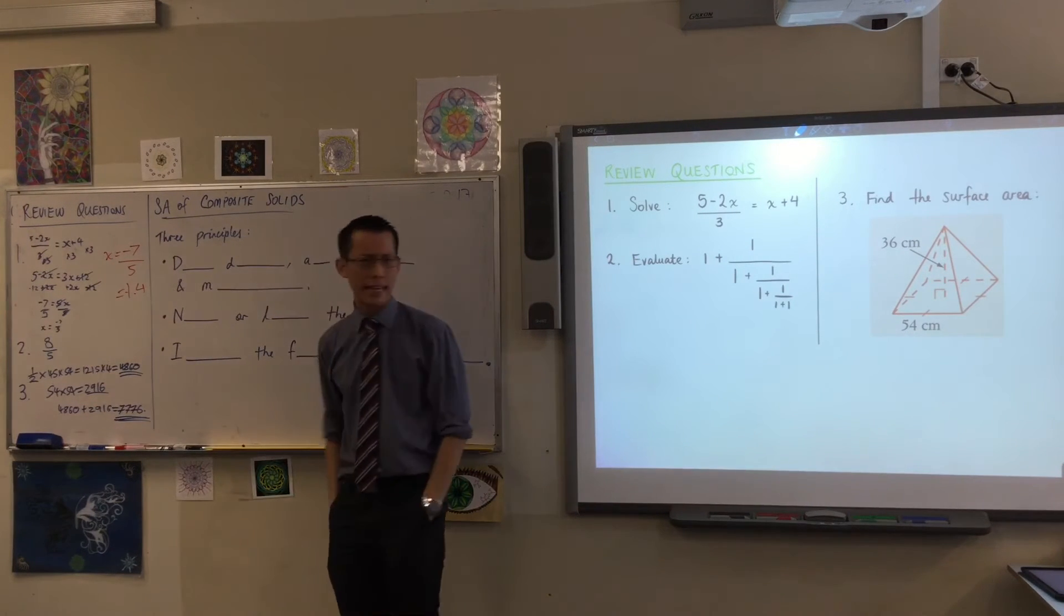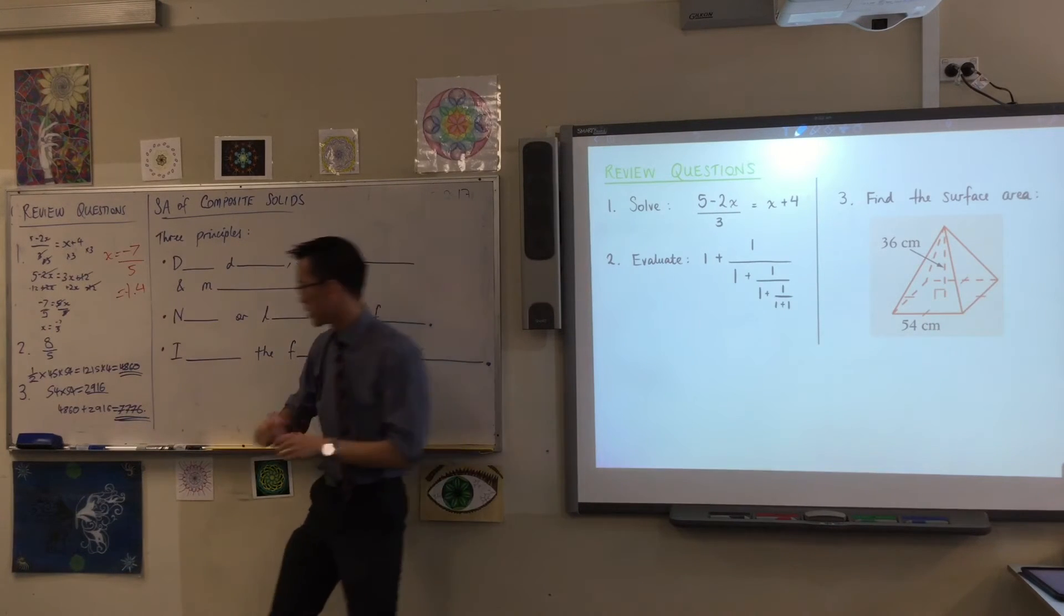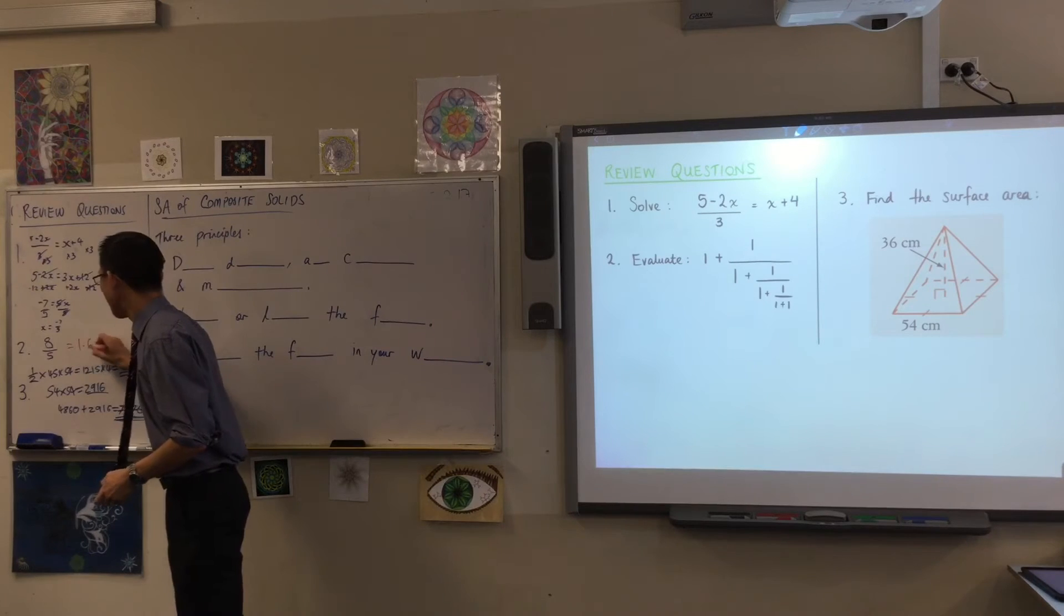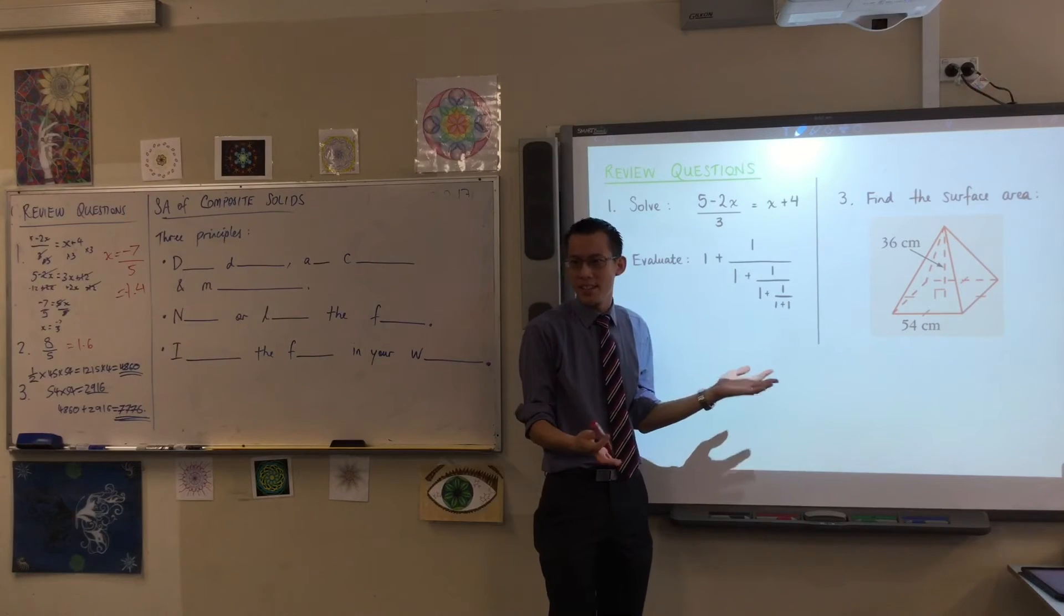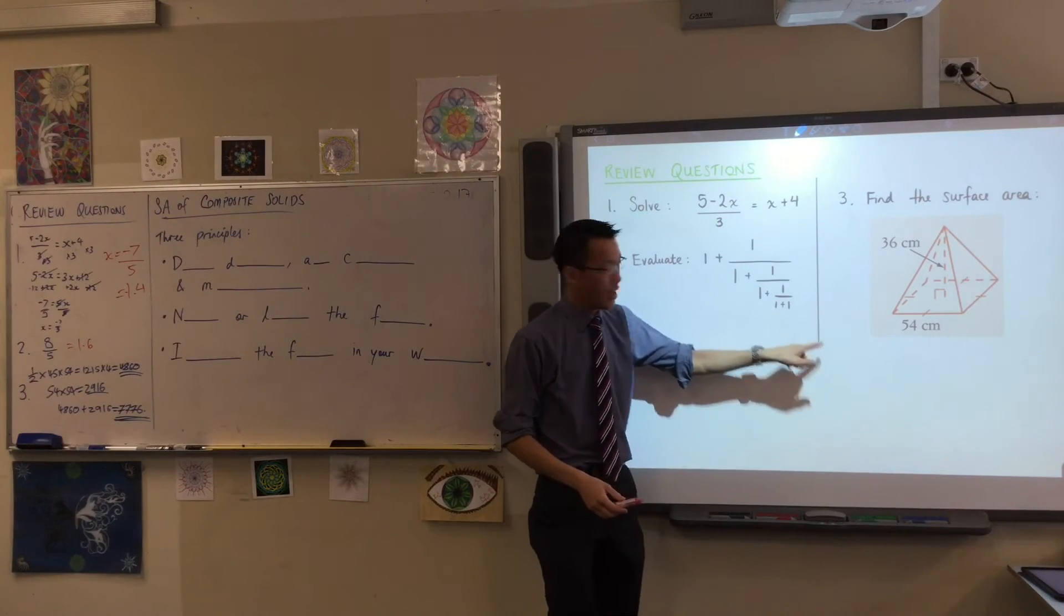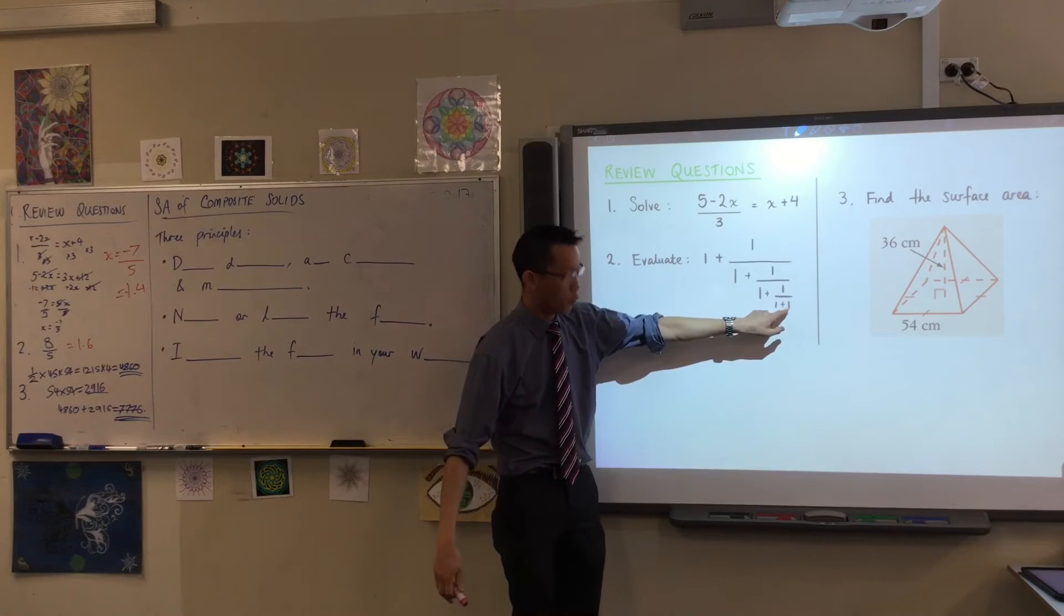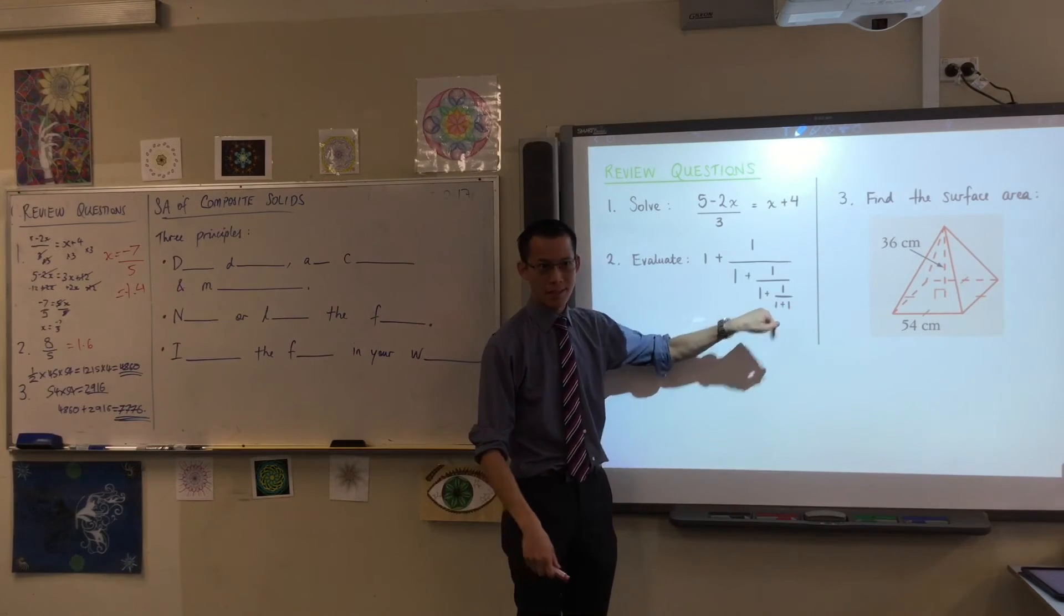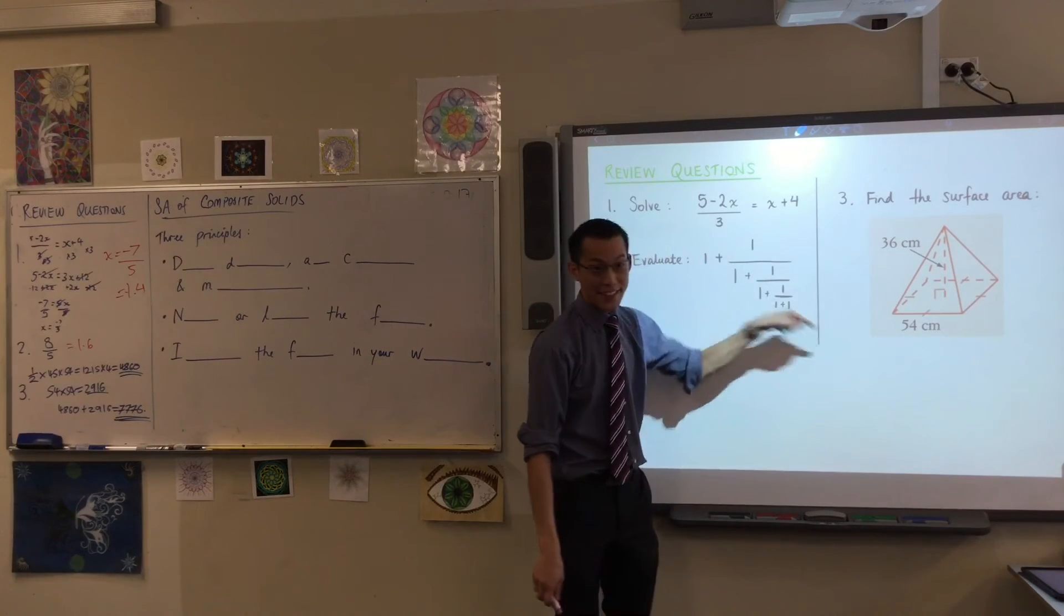Now eight over five, again, you could have written that as a decimal. What is it as a decimal? 1.6. Now I just want to point out before we move on to the last one, you can see this kind of a pattern here, isn't there? I could have kept going, right? Instead of having that final one, I could have written another one over one plus one over, and it can go on forever. In fact, if it did go on forever...